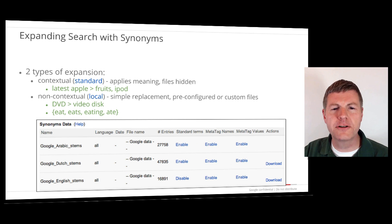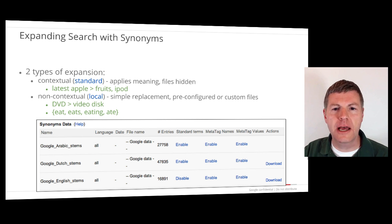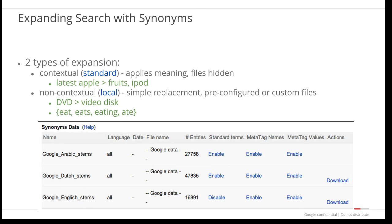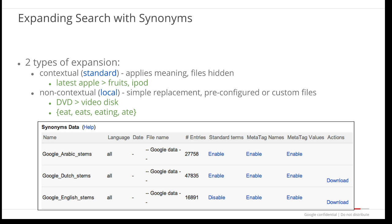Now let's look at some easy-to-configure features that help users get more relevant results. Query expansion expands the user's search from the keywords entered to include additional keywords. There are two types: contextual expansion, applied by the GSA based on the possible context of the words in the query — for example, in the search 'latest apple', the word 'apple' could mean the fruit or Apple computer products, and the word 'latest' might indicate the user is probably interested in the products. Non-contextual expansion uses synonym files that you can upload and manage.